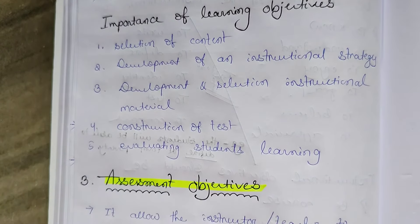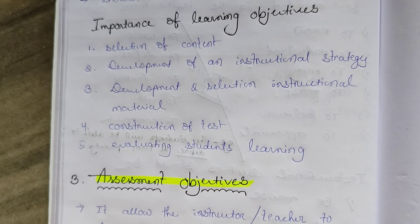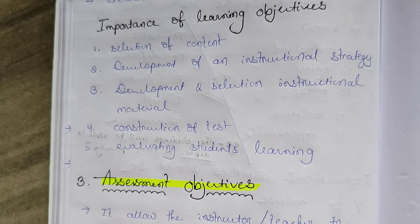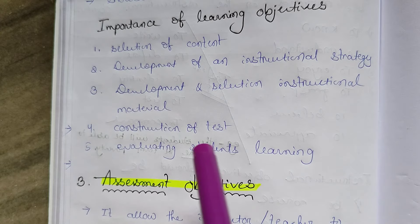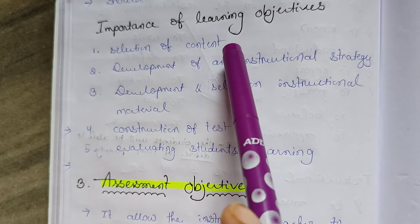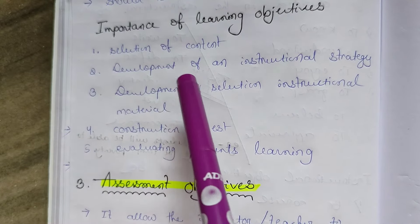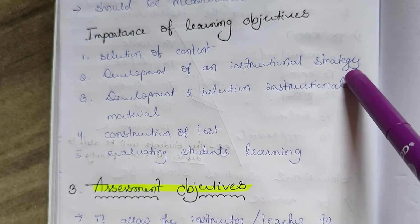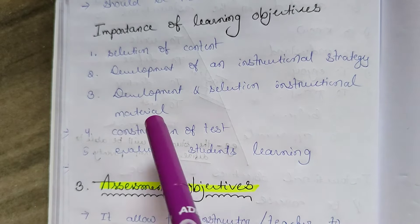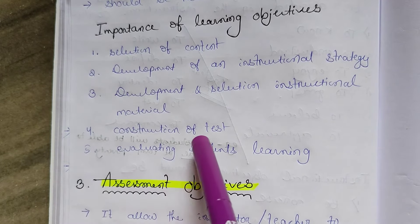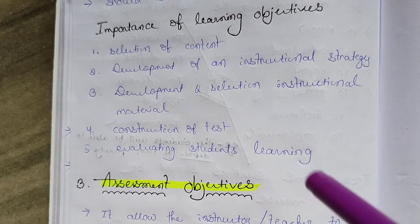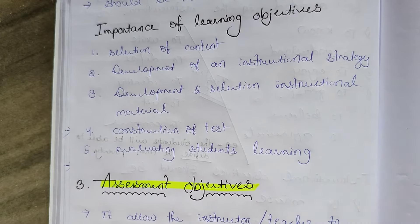The importance of learning objective: the teacher uses it for selecting content, developing an instructional strategy — how to teach, which diagrams and examples to give — and selecting instructional materials. The teacher also constructs instruction and evaluates students' learning to check how much the students understood. This makes learning objective measurable and practical.